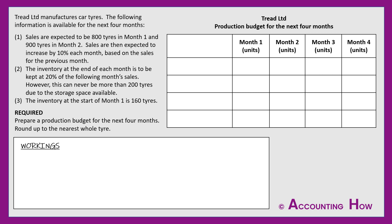The logical starting point is to think about how many car tyres we're expecting to sell each month. Point one tells us sales are expected to be 800 tyres in month one and 900 tyres in month two. So I enter those figures into my budget under the 'sales' narrative.